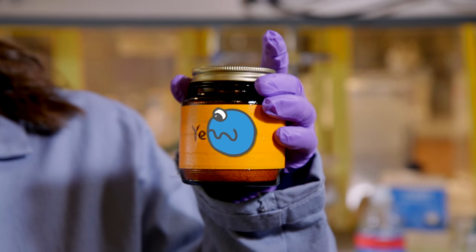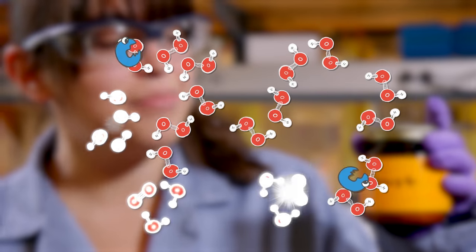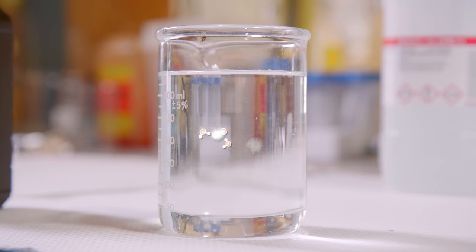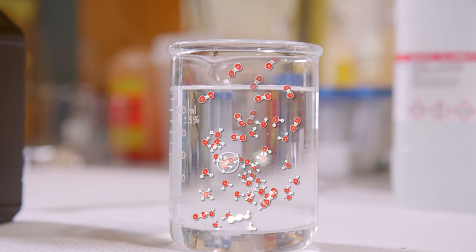And the cool thing is the catalase doesn't get used up at all in the process, so it keeps going around breaking apart the hydrogen peroxide, quickly releasing oxygen gas and water. And normally this oxygen gas would just get released out into the air, but for fun we can trap it in soap bubbles.